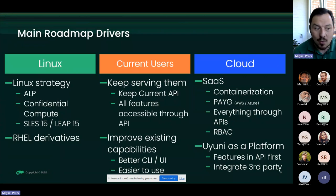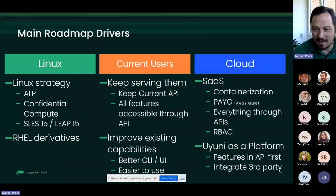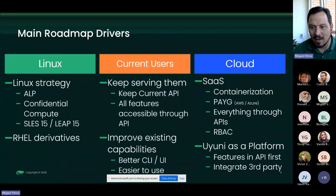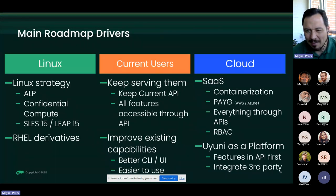We want to keep current users happy: preserve all features accessible through the API, improve capabilities, and polish things. For example, when you register a system with a duplicate ID, we should at least show a warning. These are things we should take care of when time allows. For cloud and containerization: we are containerizing Uyuni — first images will appear in the next release, which we expect to be 2023.10.